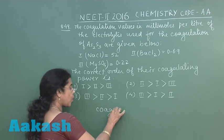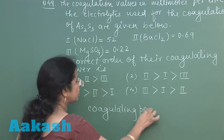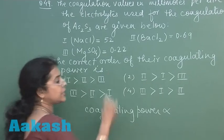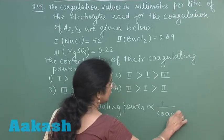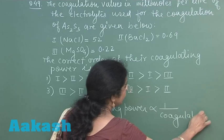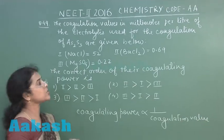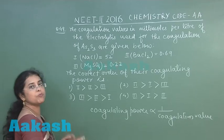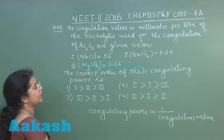As we know, coagulating power is inversely related to coagulation value. It means the electrolyte which is having minimum coagulation value will have maximum coagulating power.